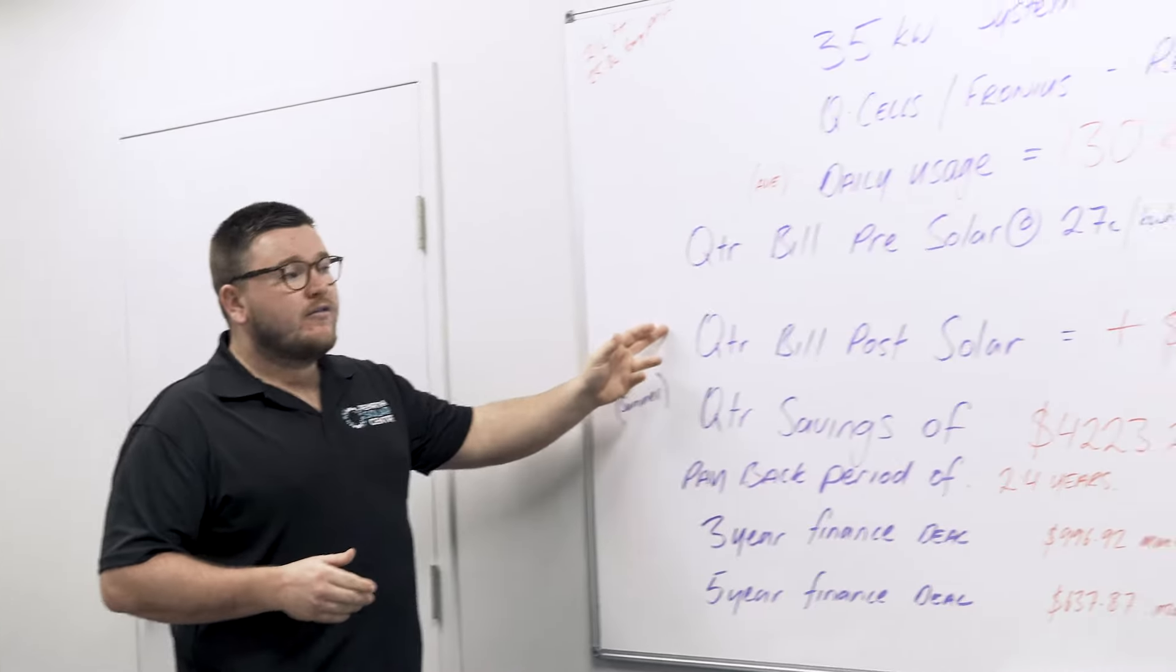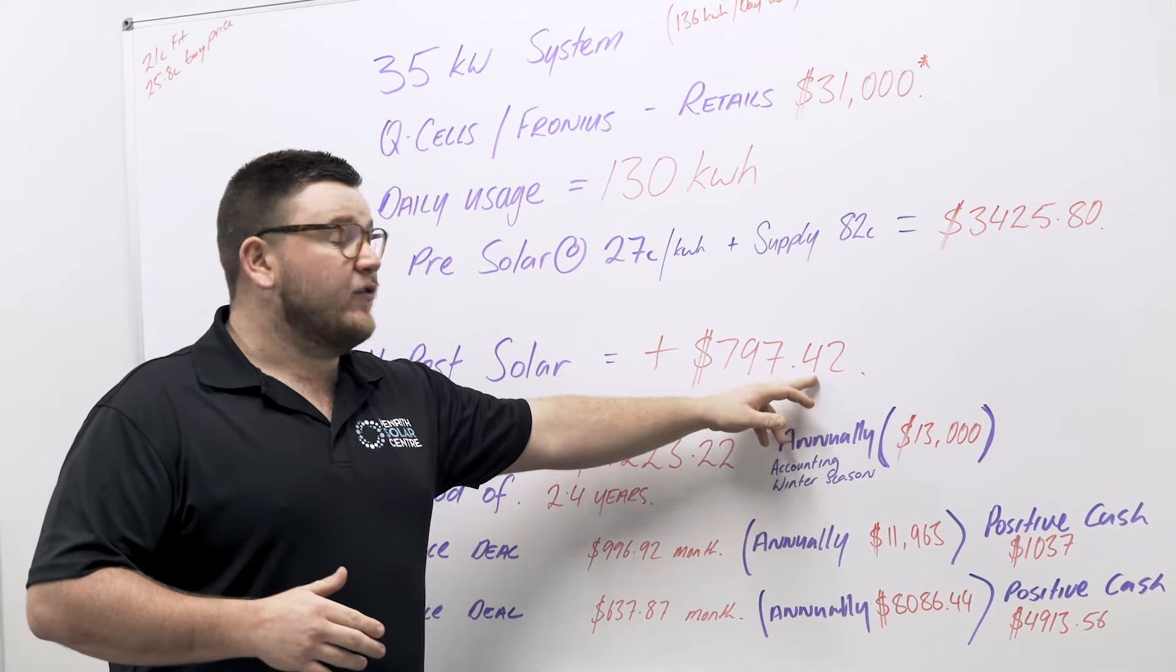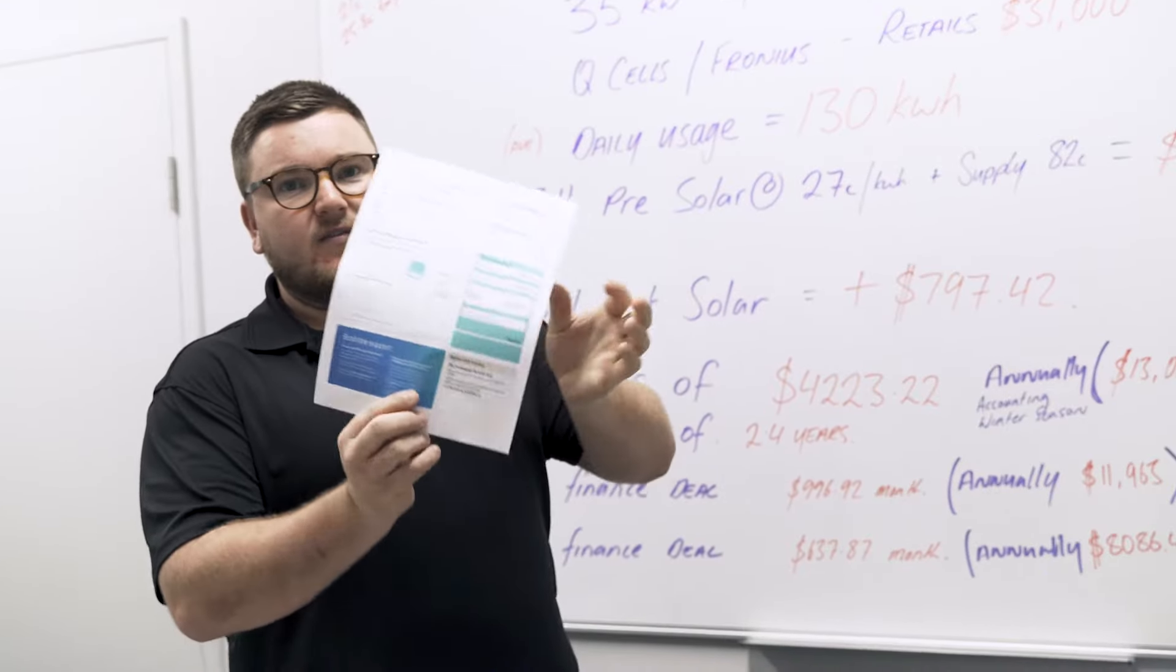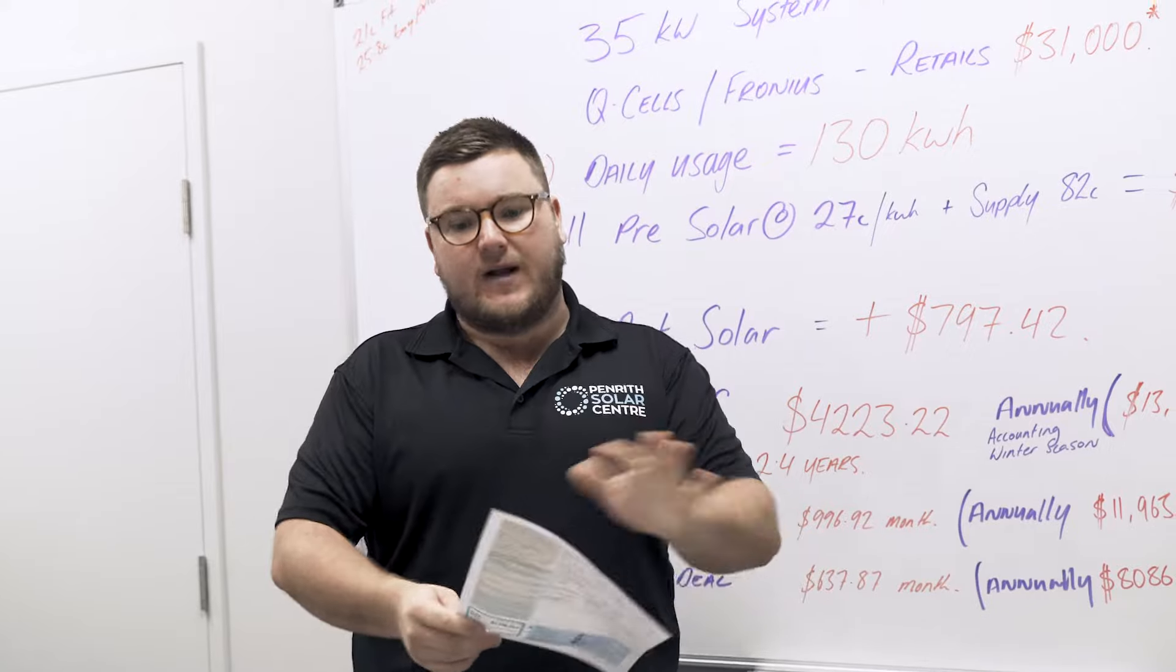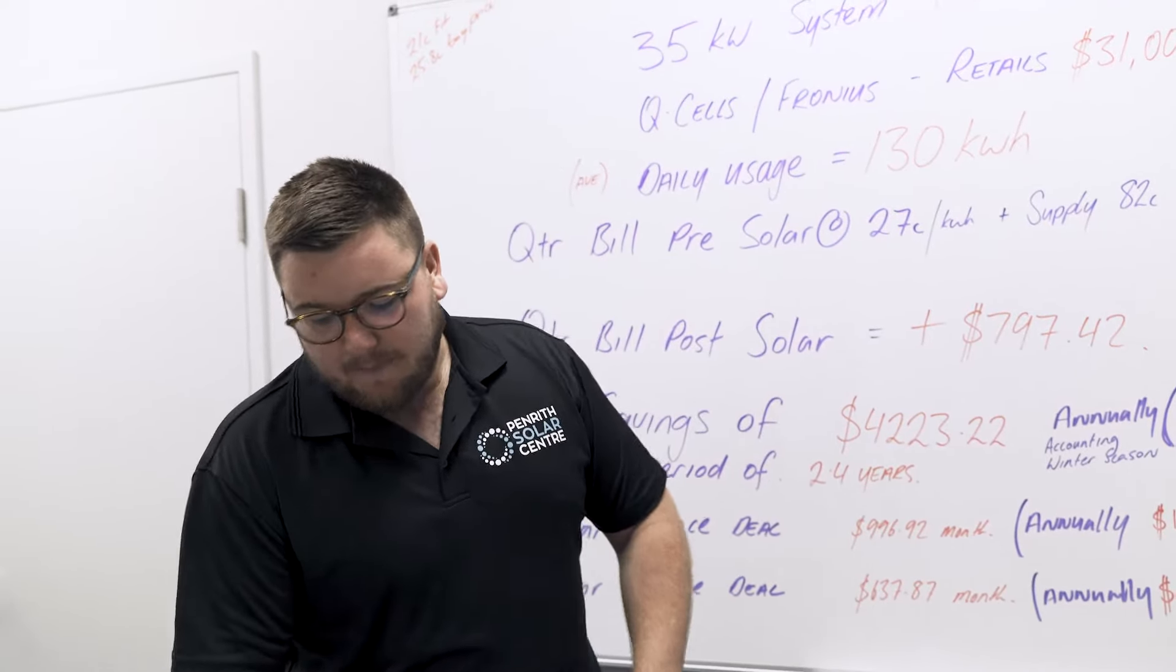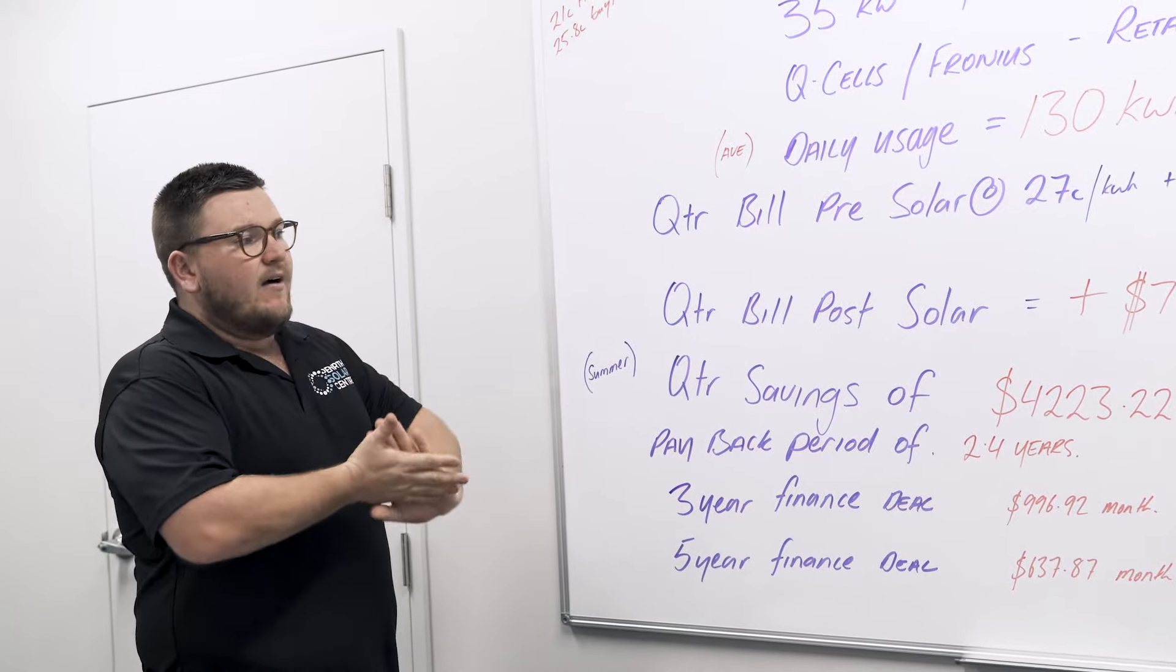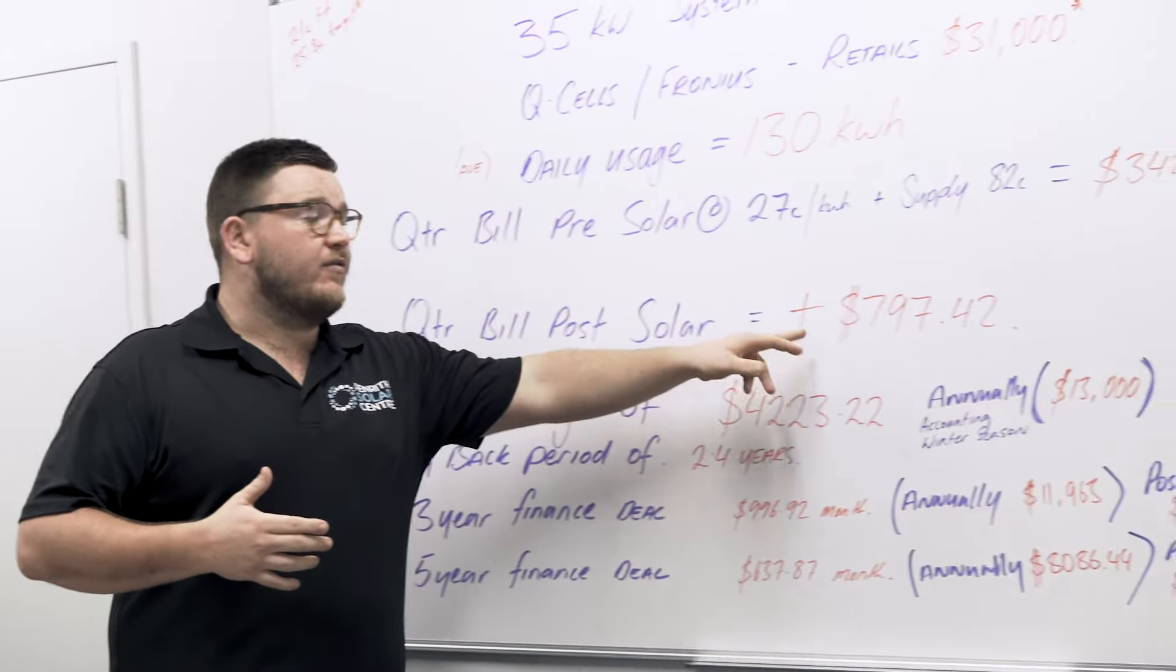Our quarterly bill post-solar was a credit of $797.42. Now I know I said that we're in a credit of $1,176, but a little bit of that was rolled over from our previous bill, so that's what our tally is up to at the moment. So as I said, this one, $797.42, is our actual bill in a credit, so positive $797.